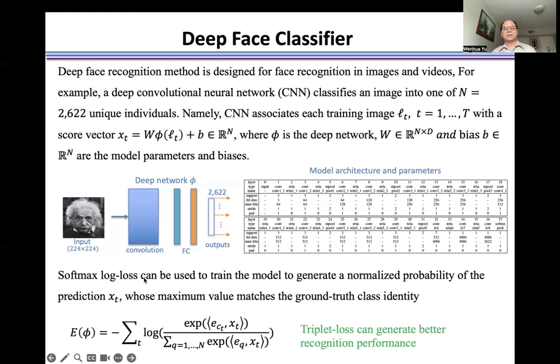Softmax log loss can be used to train the model to generate a normalized probability of the prediction xt, whose maximum value matches the ground truth class identity.